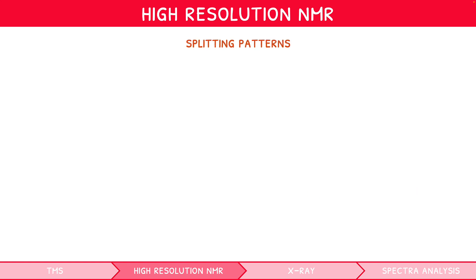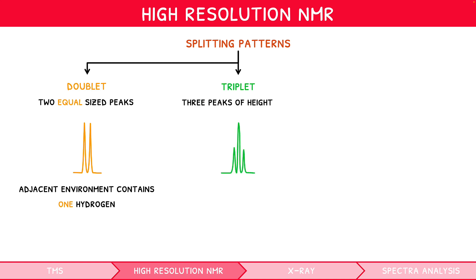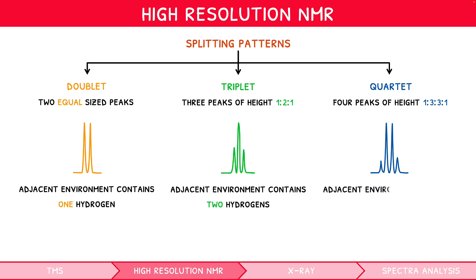There are three main splitting patterns to learn. A doublet is when a peak splits into two equal-height peaks, indicating the adjacent proton environment contains one hydrogen, i.e. is a CH group. A triplet is when a peak splits into three peaks of height ratio 1:2:1, indicating the adjacent environment contains two hydrogens, i.e. is a CH₂ group. A quartet is when a peak splits into four peaks of height ratio 1:3:3:1, indicating the adjacent environment contains three hydrogens, i.e. is a CH₃ group.